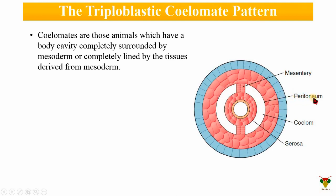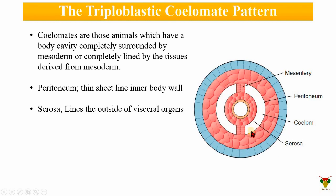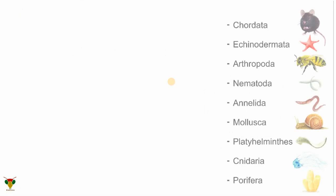We also have some important structures in the true coelomic body. First is the peritoneum — a thin sheet lining the inner body wall. The inner lining of the body wall is known as the peritoneum, while the other side of the mesodermal or coelomic cavity is known as the serosa, which lines the outside of the visceral organs — all the organs present in the thoracic or abdominal cavity.